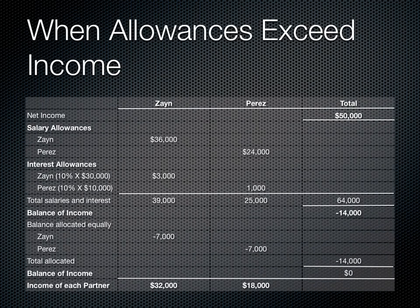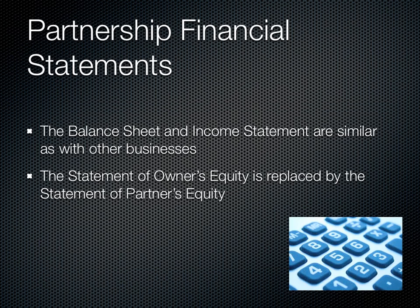In the next slide, we see what happens when allowances exceed income. In this particular case, the business lost $14,000, and the shortfall is divided equally among the two partners, which reduces their overall capital contribution. The balance sheet and income statement for a partnership are similar to any other kind of business — the only major difference is that the statement of owner's equity is replaced by a statement of partner's equity.